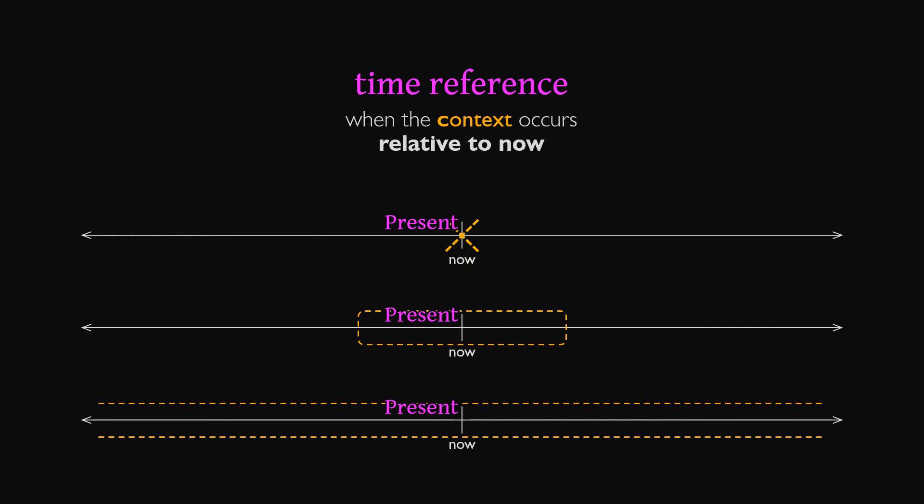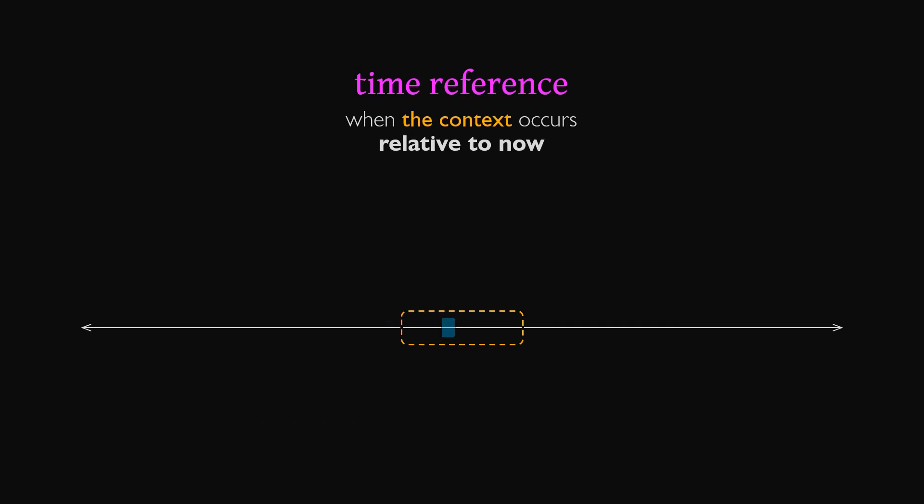So time reference expresses whether the context occurs in the past, present, or future, but notice that we haven't really addressed yet when the verbs take place. Verbs might occur sometime within the context, or span the entire length of the context, or even occur outside the context, either in part or in full. This is where aspects come in.